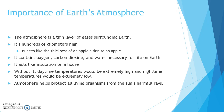We have different layers. It contains oxygen, carbon dioxide, and water, which is necessary for life on Earth. It acts like insulation on a house, so it helps keep the heat inside. Without it, daytime temperatures would be extremely high and nighttime temperatures would be extremely low — too extreme for life on Earth. The atmosphere also helps protect all living organisms from the sun's harmful rays.